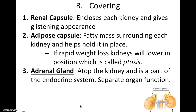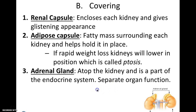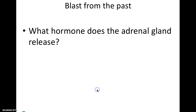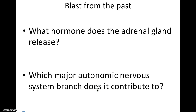Your adrenal gland does not have much to do with the urinary system, but it is atop each of your kidneys and is part of the endocrine system — it's a separate organ function. As a blast from the past, you'll answer: what hormone does the adrenal gland release, and what major autonomic nervous system branch does it contribute to?